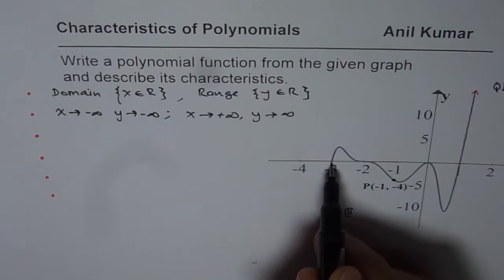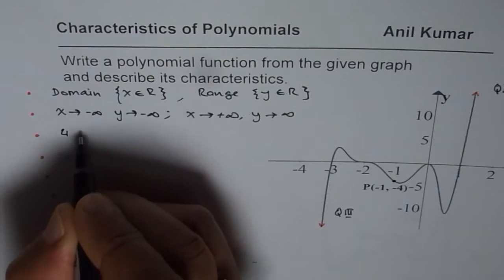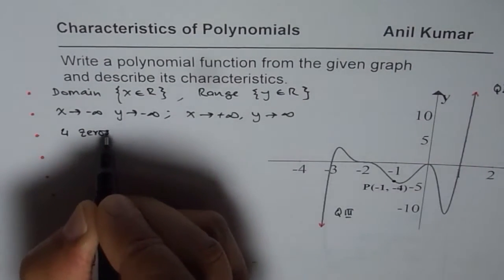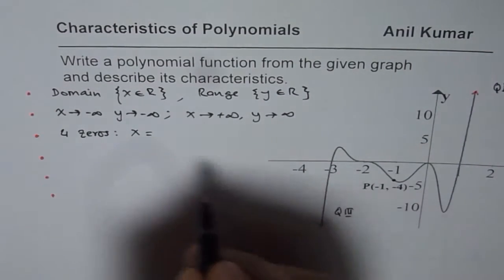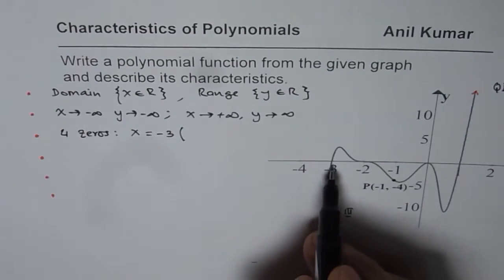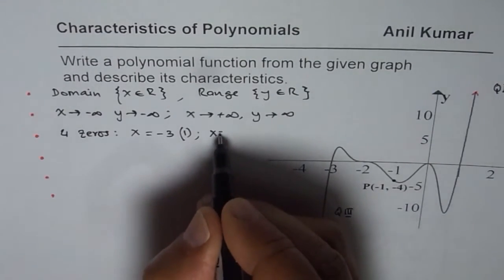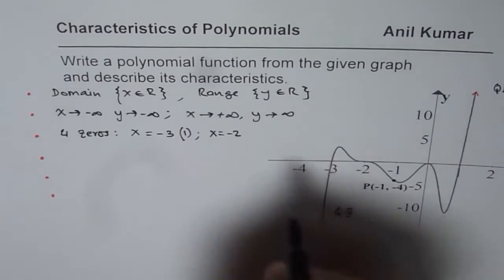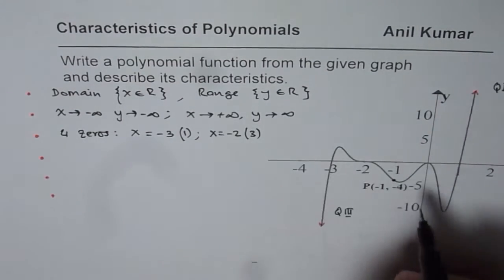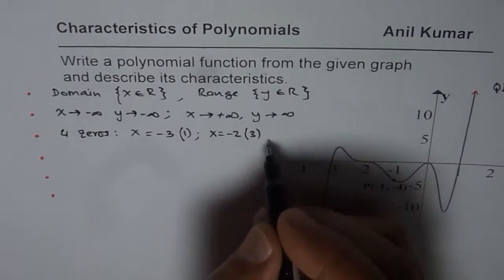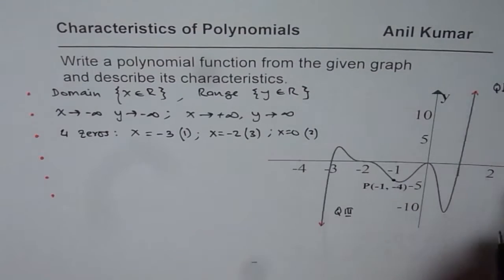And it has how many zeros? 1, 2, 3, 4 zeros. So it has 4 zeros. Let me describe these zeros for you. The first one is at x equals to minus 3, and in the brackets, I am writing multiplicity. This is straight, so it is like 1. The other one is at x equals to minus 2. The order in this case could be 3 or 5, let me write 3. And then we have 1 at 0. So when we have at x equals to 0, the order is 2 since it turns.